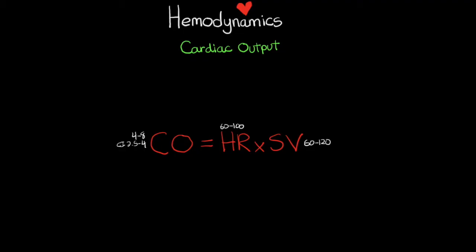An important thing to know about heart rate and stroke volume is that they work together in a seesaw-like manner. Heart rate compensates for changes in stroke volume — if stroke volume is high we'll have a lower heart rate, and if stroke volume decreases, heart rate will increase to compensate.